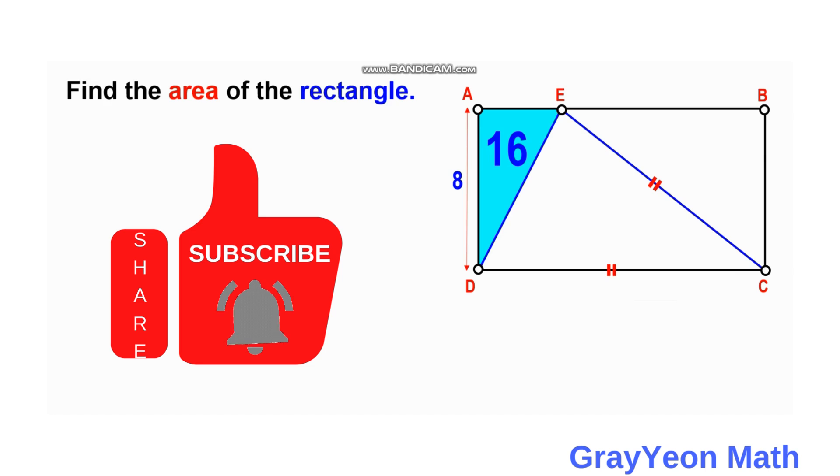A line segment is drawn which is equal to the side of the rectangle. The width of the rectangle is 8 units, and we are required to find the area of this rectangle.